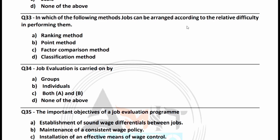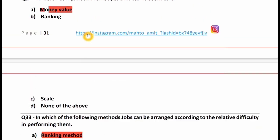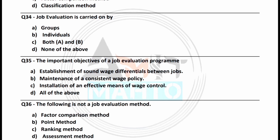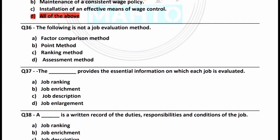In which method can jobs be arranged according to their relative difficulty in performing them? The right answer is option A, the ranking method. Job evaluation is carried on by a group — option A is correct. The important objectives of a job evaluation program are: establishment of sound wage differentials, maintenance of consistent wage policy, and installation of an effective means of wage control. All of the above is correct. The following is NOT a job evaluation method: assessment method — option D is right.